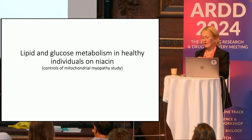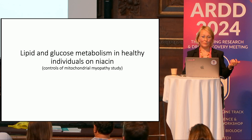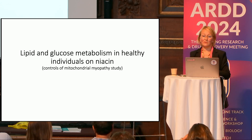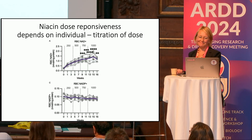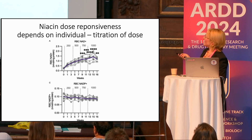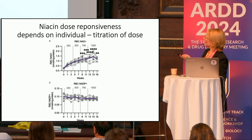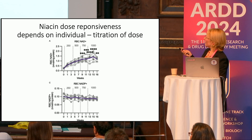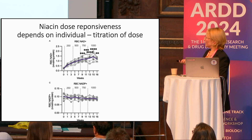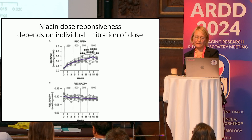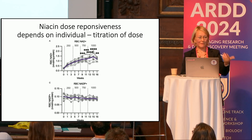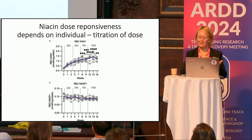We also went back to the controls from the patient study to ask what happened to healthy people taking niacin in larger amounts. You can see red blood cell NAD at doses of 250, 500, 750, and 1,000 milligrams of niacin. Some have a mild slope and some are decreasing considerably more. This didn't happen for NADP or the reduced form — NAD seems to be the one that changes most in whole blood. We are now using this to titrate the dose in patients, because some may be low responders and some high responders, to find the dose where they are in the upper normal range if they are deficient.